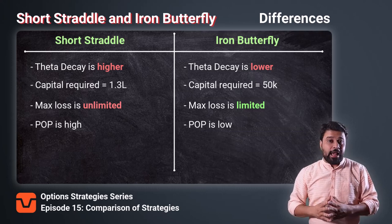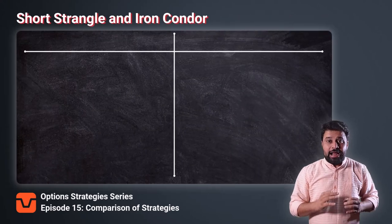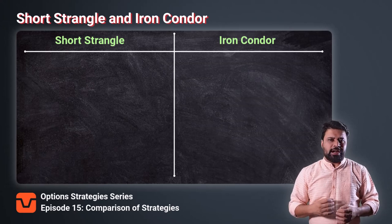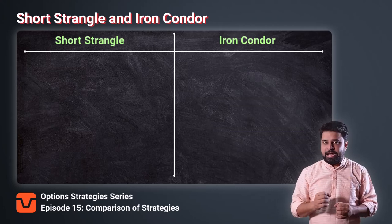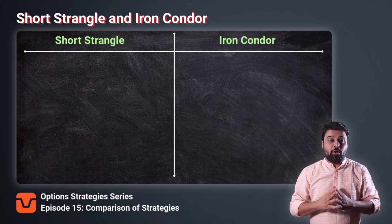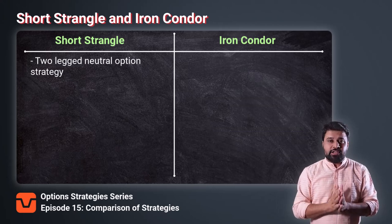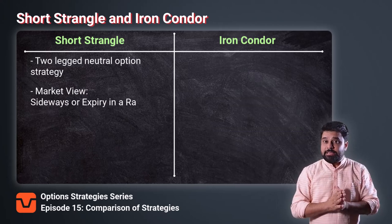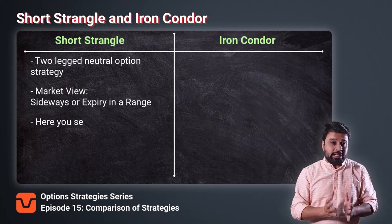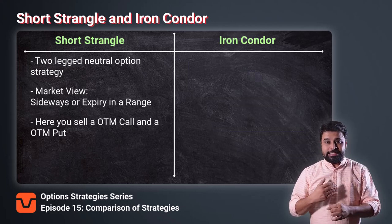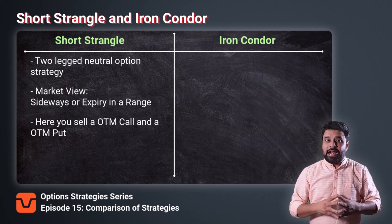Now that you have understood the similarities and differences between these two strategies, let us understand the similarities and differences between Short Strangle and the Iron Condor strategy. These two strategies are also very much similar to each other. The Iron Condor strategy is the safer version of the Short Strangle strategy. When the market is trading in a range, one of the trades you can take is the Short Strangle strategy. Short Strangle is a two-leg neutral strategy. A trader generally deploys the Short Strangle strategy when you expect the market to remain in a particular range for the next few days. In this strategy, the trader sells an OTM call and an OTM put option. Normally, a trader sells the call option near the resistance level and sells a put option near a support level, as the price tends to remain in that particular range.